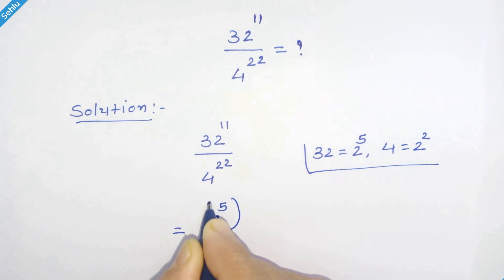5 whole raised to 11 upon 2 square whole raised to 22. Now let's recall this rule: if we have